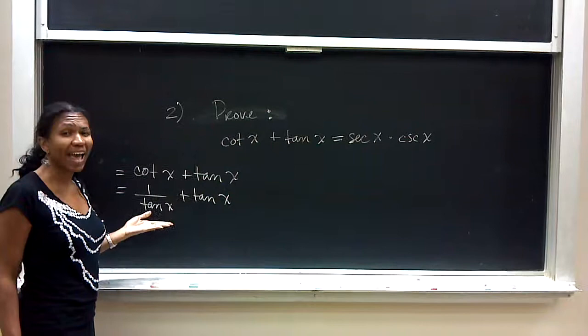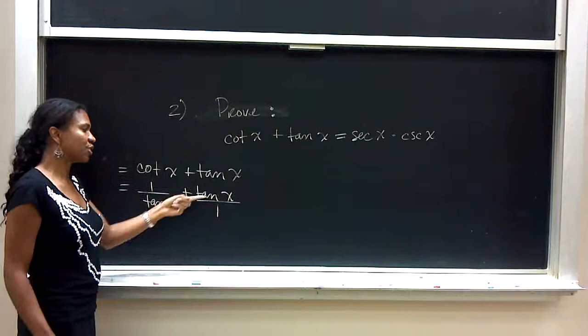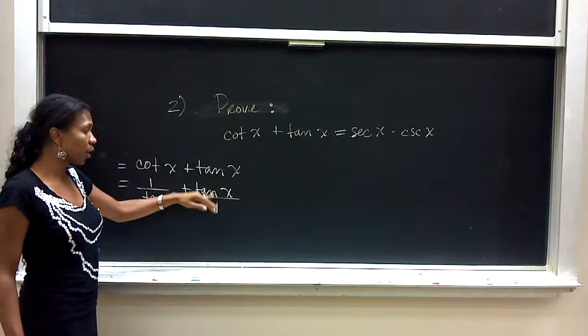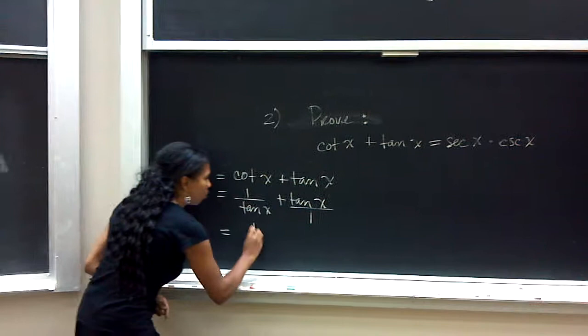Now this is a fraction. In order to add fractions, we must have common denominators. So this tangent x is equivalent to tangent x over 1. We have a common denominator of tangent x. So we want to make this denominator also have tangent x.